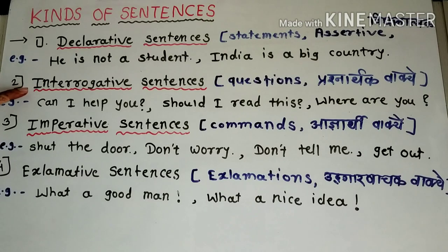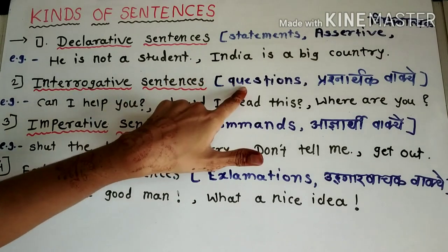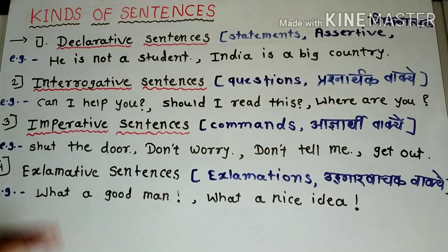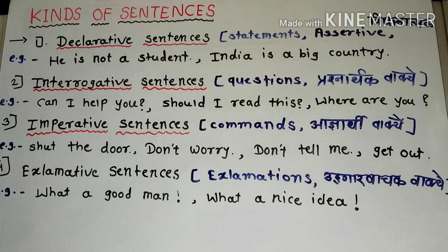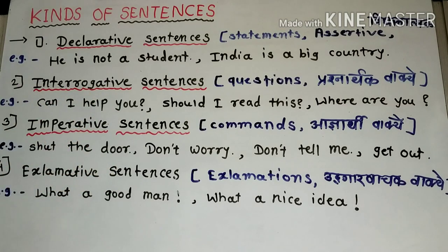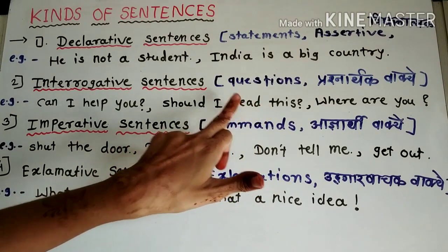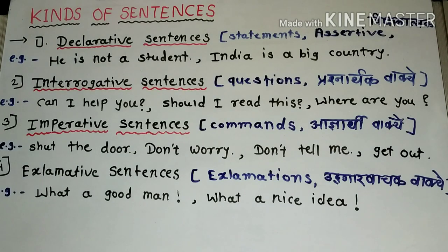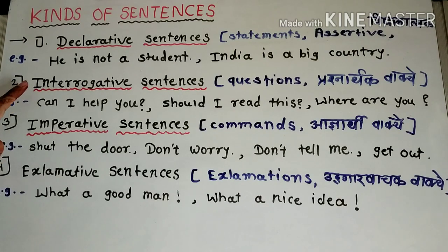The second type is interrogative sentences — questions, or 'prashnarthak vakye.' In these sentences we ask a question to someone. Examples: 'Can I help you?' — meaning 'Can I help you?' 'Should I read this?' 'Where are you?' 'What is your name?' 'Where are you going?' 'What are you doing?' — all of these are interrogative sentences.